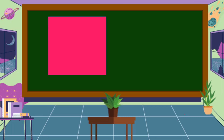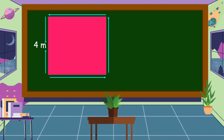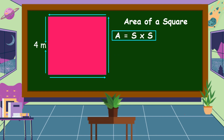What plane figure is this? This is a square. Suppose that one side of this square is 4 meters — find the area of this square. The formula for finding the area of a square is side times side. So our side here is 4 meters times 4 meters. 4 meters times 4 meters is equal to 16 square meters.